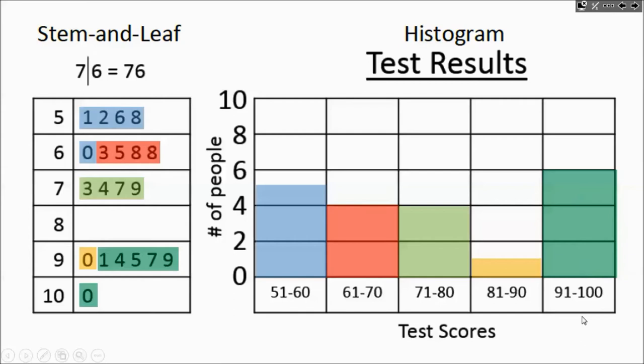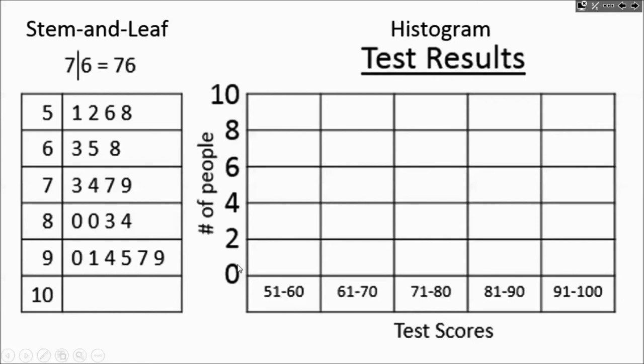Moving on. We have our final tables here. We have the stem and leaf plot. We have the histogram. 51 to 60. It's going to be these four.